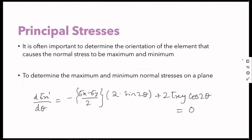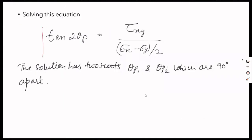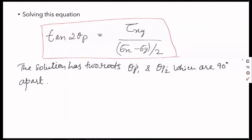After solving this differentiation equation and equating it to zero, we get tan(2θP) = τxy / ((σx − σy) / 2). When we solve this equation, we get two theta values, θP1 and θP2, which are 90 degrees apart. And 2θP1 and 2θP2 will be 180 degrees apart.